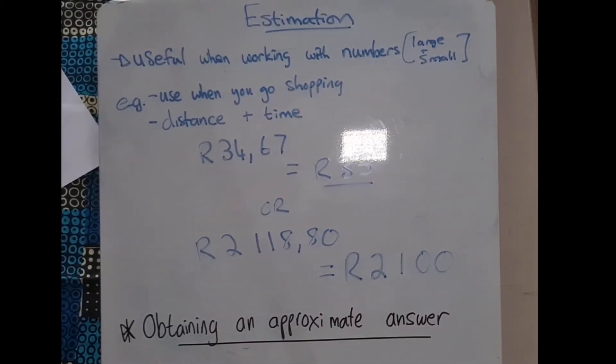Now the reason we do this is because of examples like I'm showing you here. If I was to ask you to add R2118.80 to R34.67, what would you do? Well, the first thing you're going to do is work out an estimate.